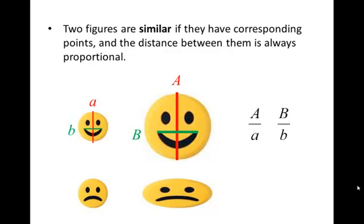So the idea of them having matching tops and bottoms or smiley faces is the idea of having corresponding points, and the idea of the distance between them being proportional is that if we look at A divided by a and B divided by b, they should be the same thing.